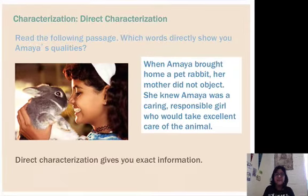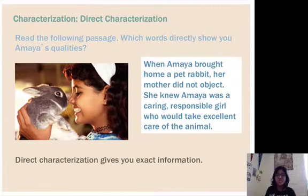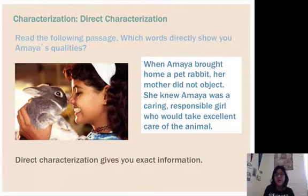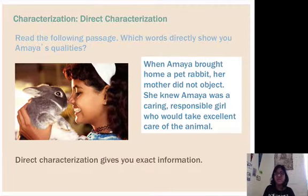Let's look at some examples of direct characterization. In this passage, let's look at what Amaya is like. When Amaya brought home a pet rabbit, her mother did not object. She knew Amaya was a caring, responsible girl who would take excellent care of the animal.